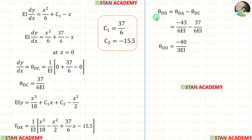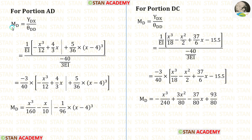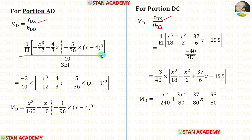Now let us calculate theta_dD. In the formula, let us apply the values. After applying, we are getting theta_dD. Now we can form the formula to calculate the ordinates for MD. For portion AD we have formed Ydx, and for portion DC we have also formed Ydx. We have calculated theta_dD. Applying all values and after simplifications, we are getting the final expressions.